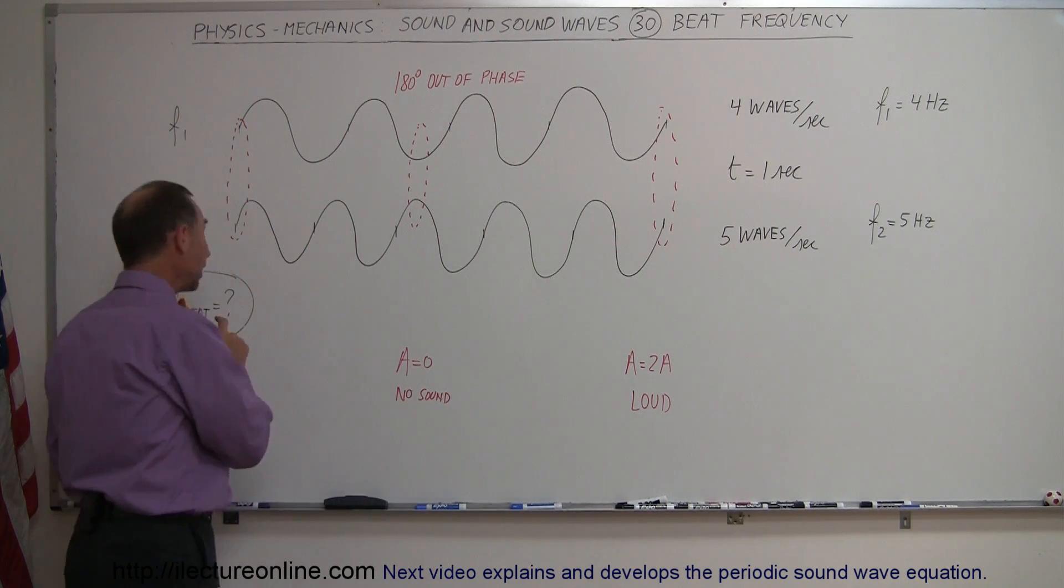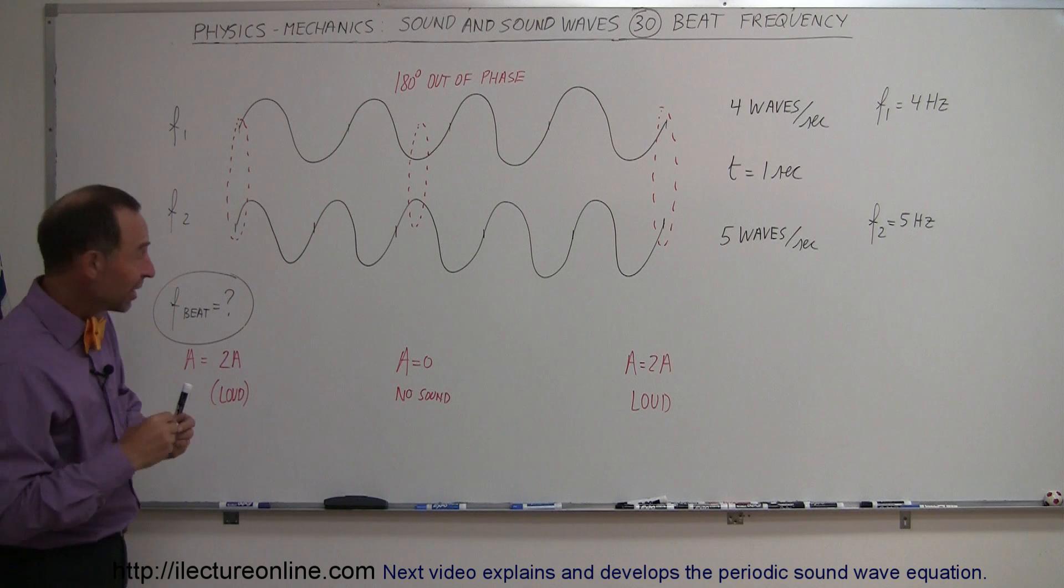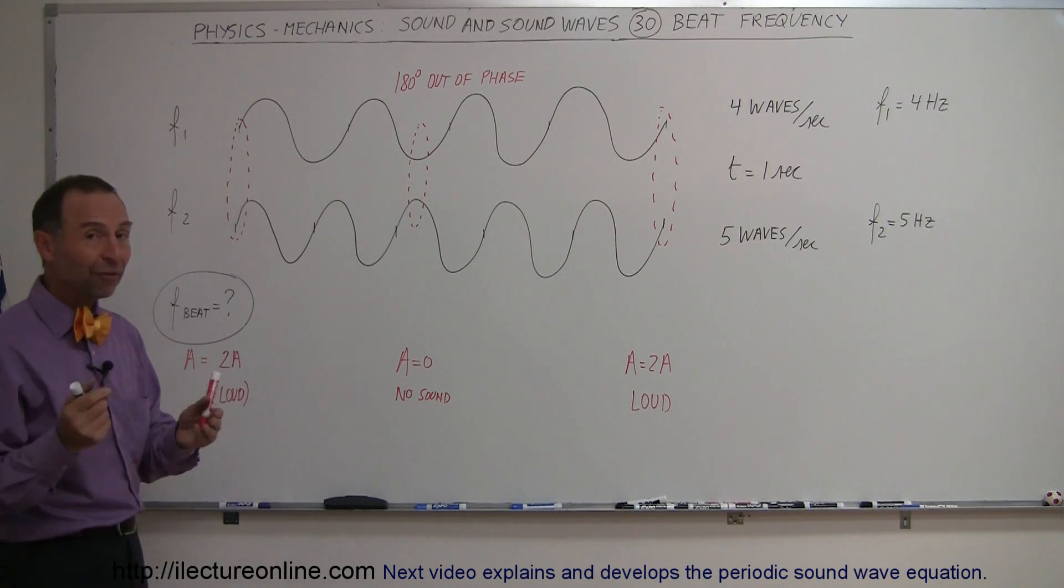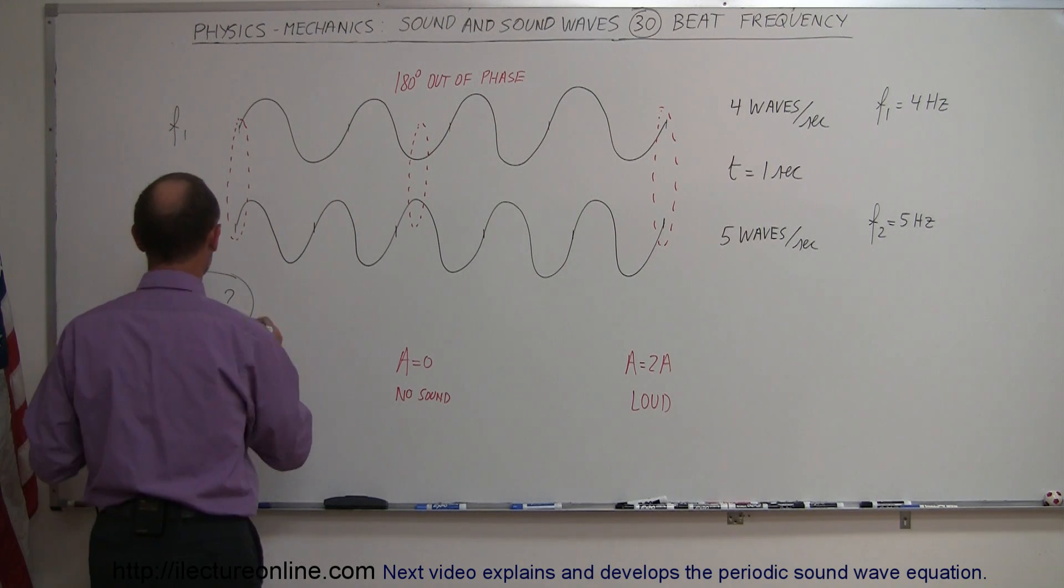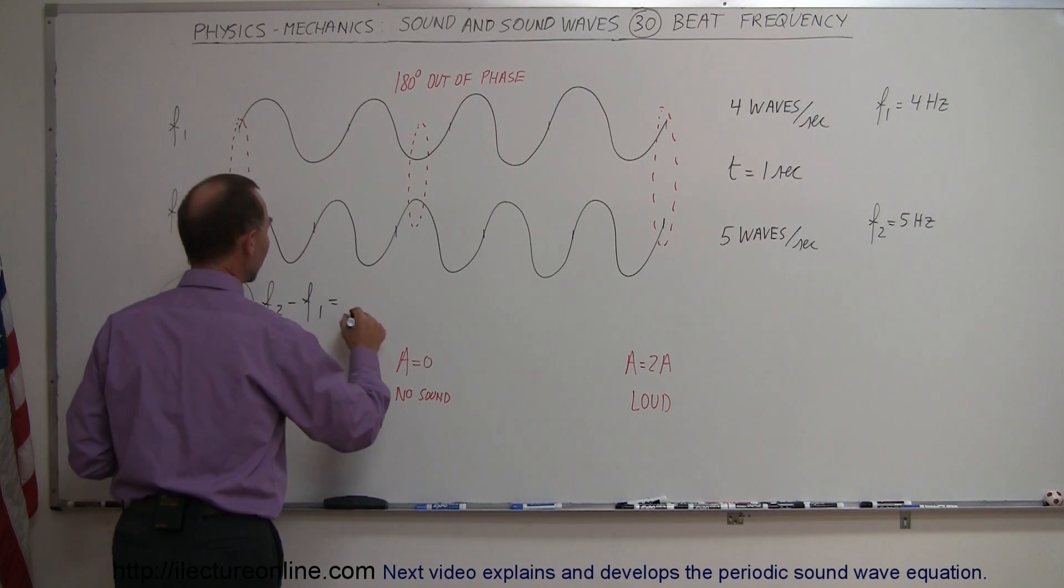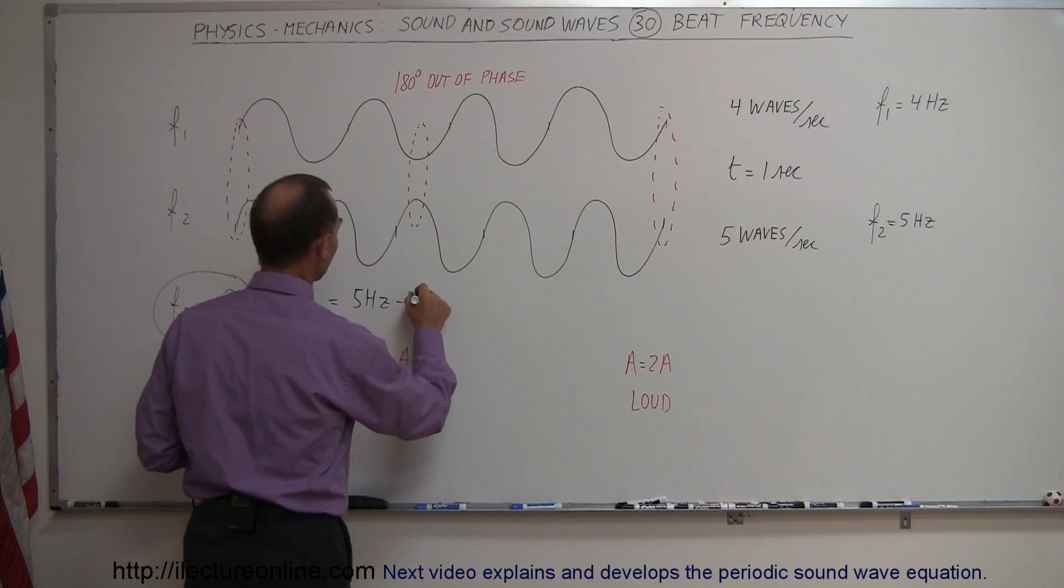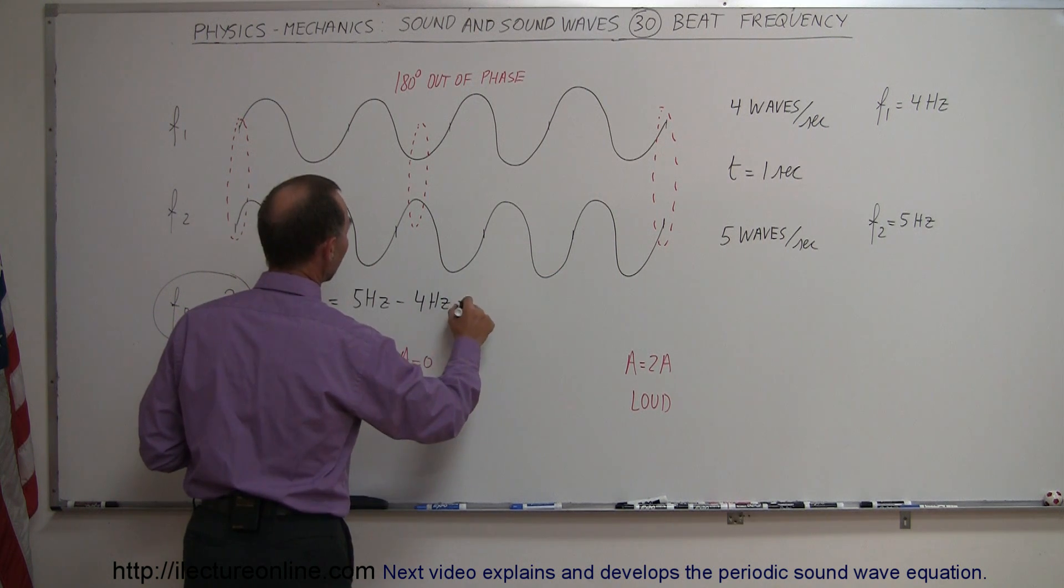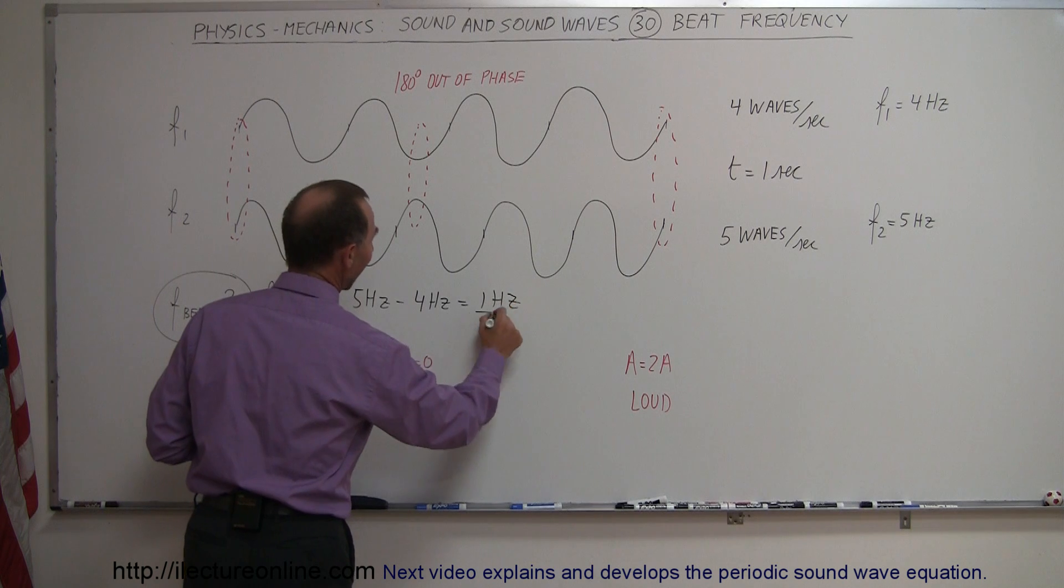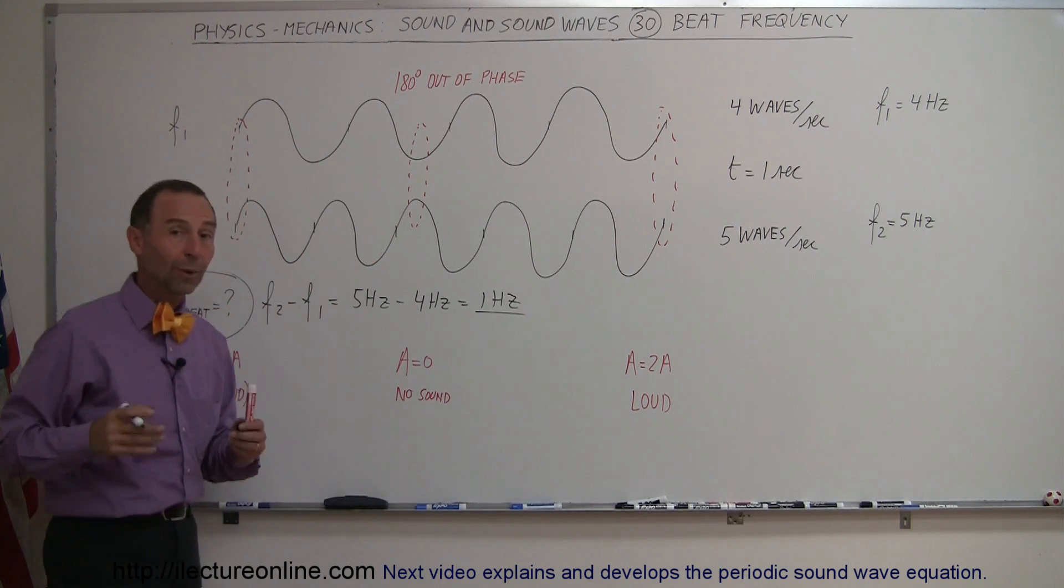The equation to actually calculate the beat frequency is that it's simply the difference between the two frequencies. So in this case that would be equal to F2 minus F1, which is equal to 5 Hertz for F2 minus 4 Hertz for F1, which is equal to 1 Hertz. And that's exactly what we see here: every one second, at a rate of once per second, you will hear a loud sound.